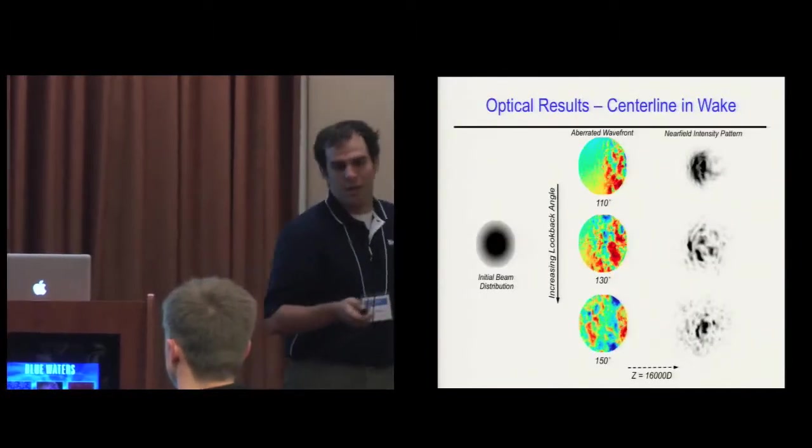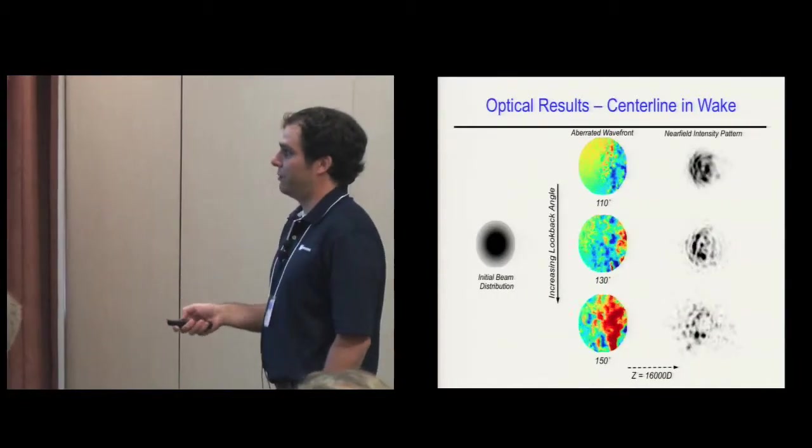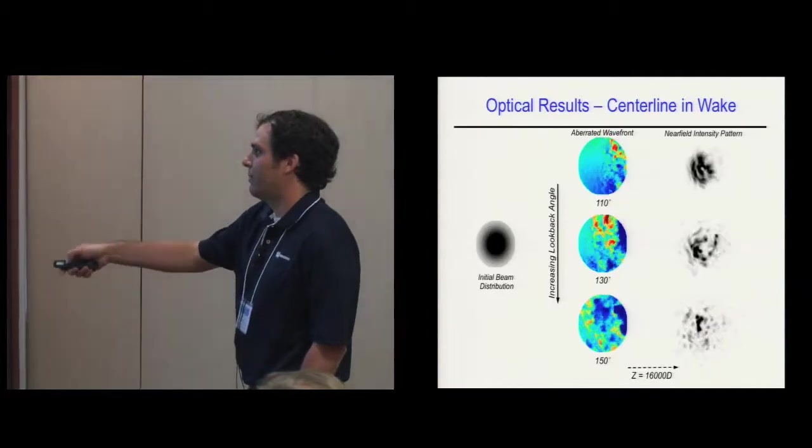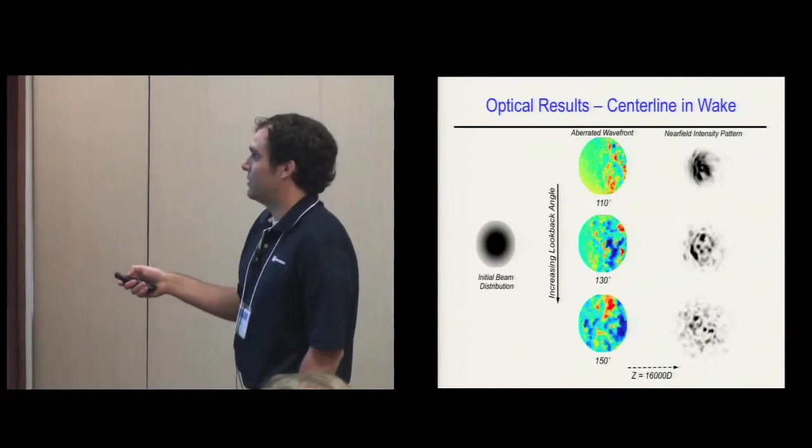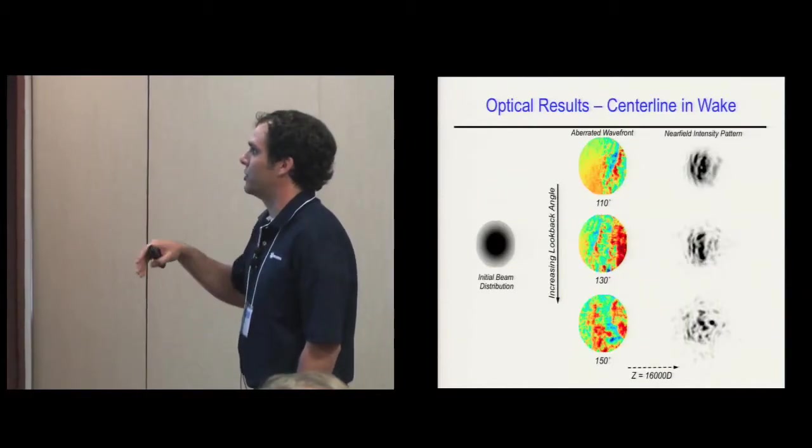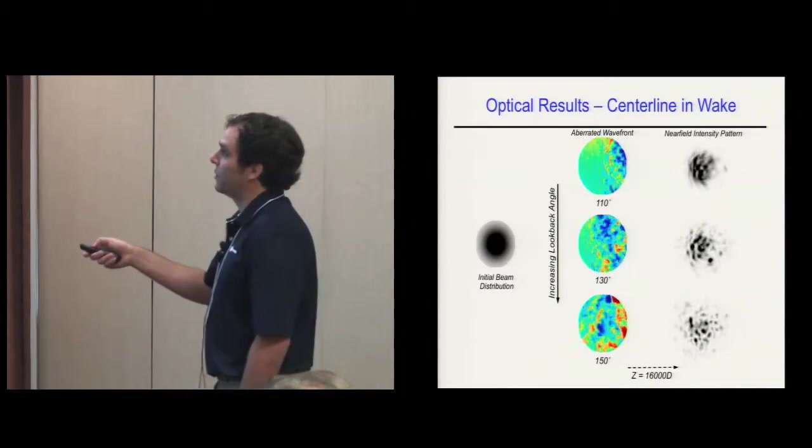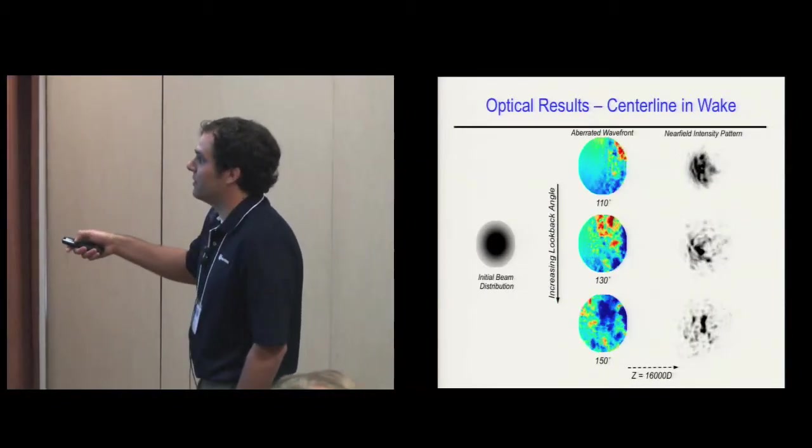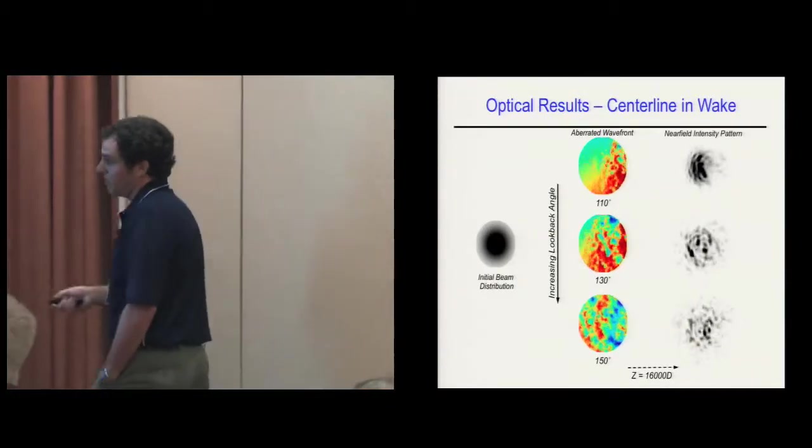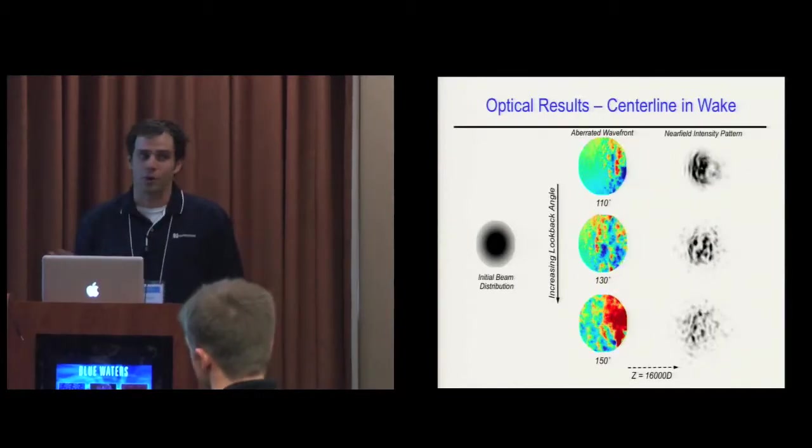This is a movie of what happens to the optics. This is the initial beam distribution, then it gets projected through, looking further back into the wake. You can see what this does - this is a near field intensity pattern from Fresnel diffraction up to 16,000 D. You can see the bands in here. The farther back you look, the worse it gets. What initially looked like this is almost totally non-coherent.